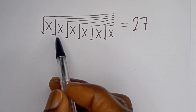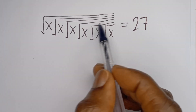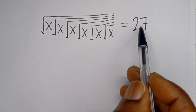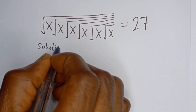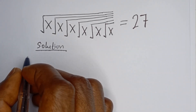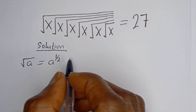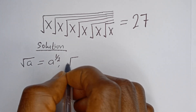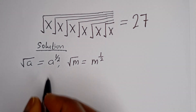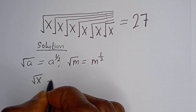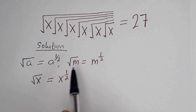Hello. How to solve for s in this equation: square root of s, times square root of s, times square root of s, times square root of s, times square root of s, times square root of s, is equal to 27. You won't believe what the answer is. Solution: if you have square root of a, this is equal to a to the power of 1 over 2. Similarly, square root of s is s to the power of 1 over 2.